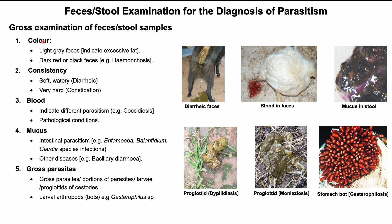A submitted sample is first checked for normal color. Light gray feces indicates excessive fat in the feces, which further indicates inability of the animal to emulsify the fat due to a problem in the liver or the animal being provided feed rich in excess fat. Dark red or black feces indicates the presence of blood in the feces.